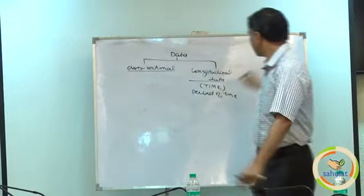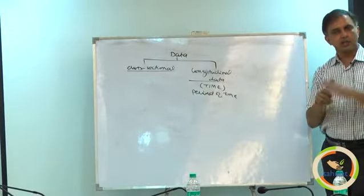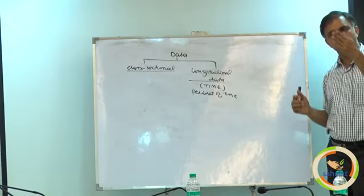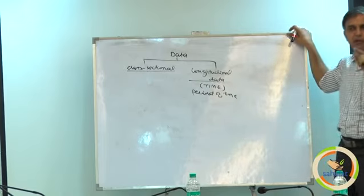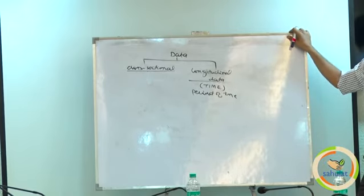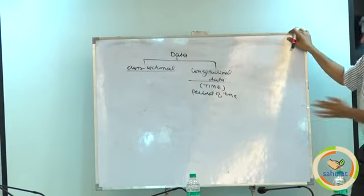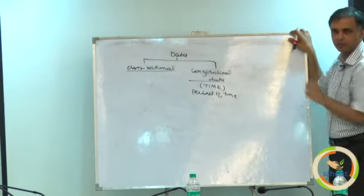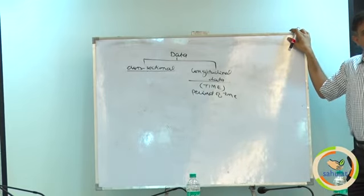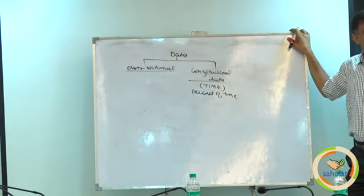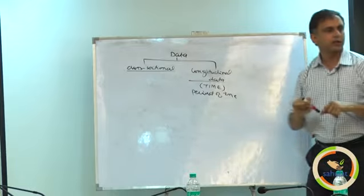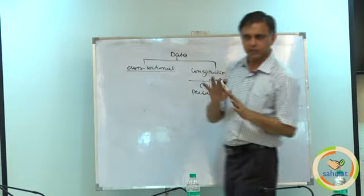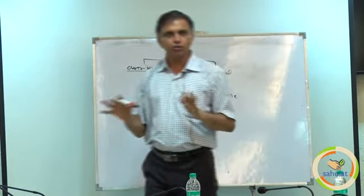Longitudinal data is when the same thing is observed over a period of time. If you take one company's earnings per share for the last 10 years, that is longitudinal data. If you take 10 companies and their EPS today, that is cross-sectional data. Am I clear between the two?